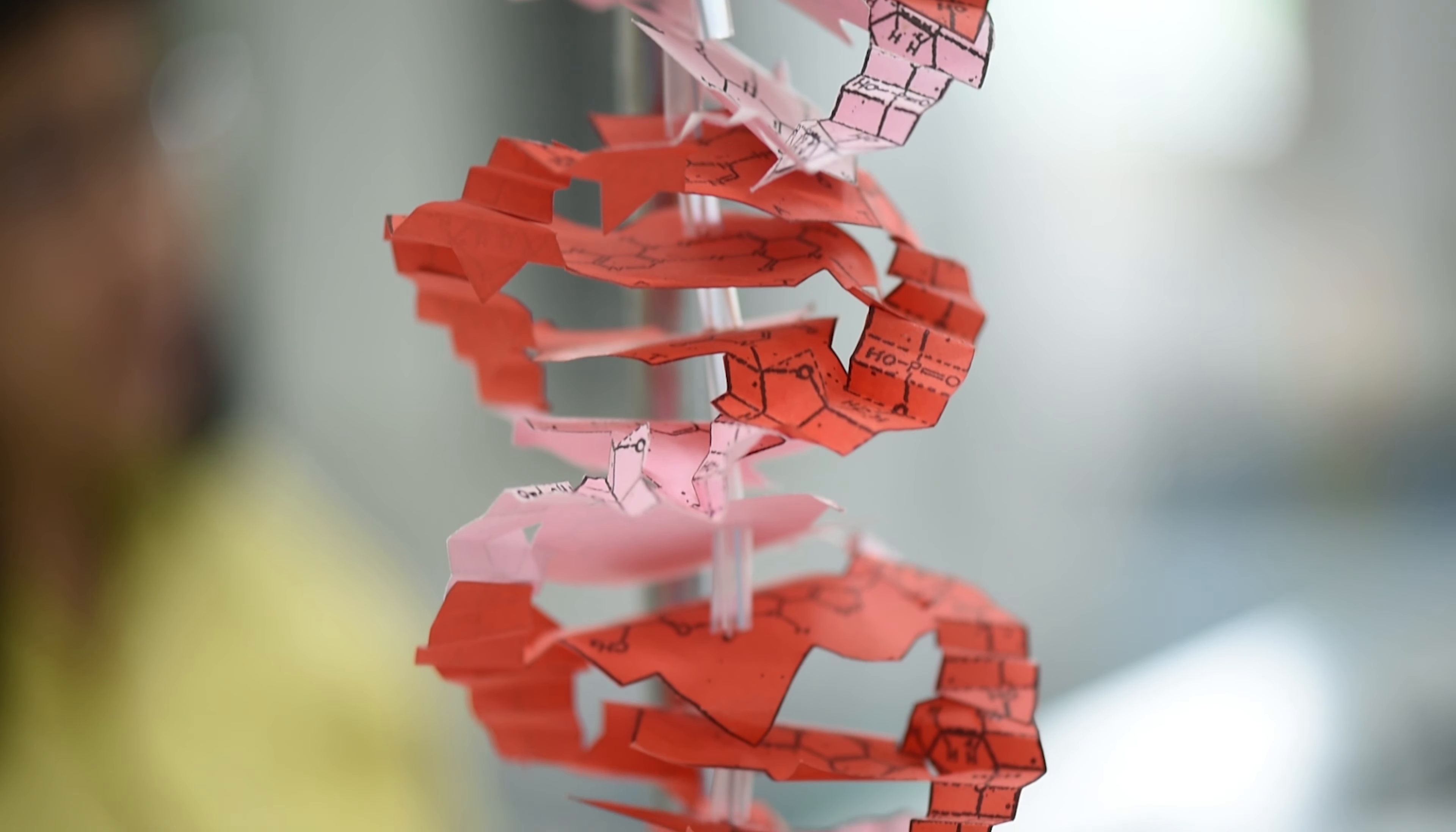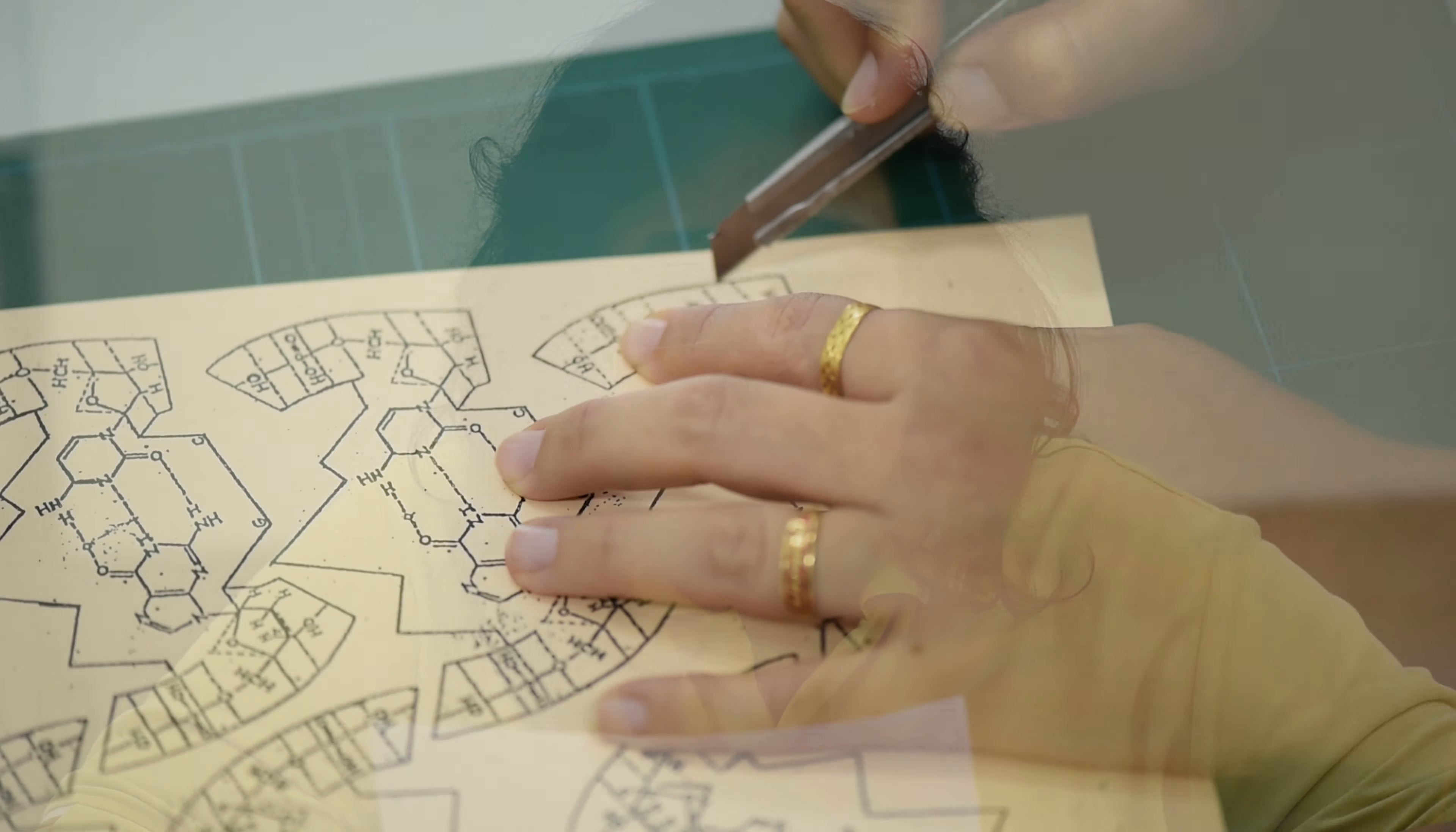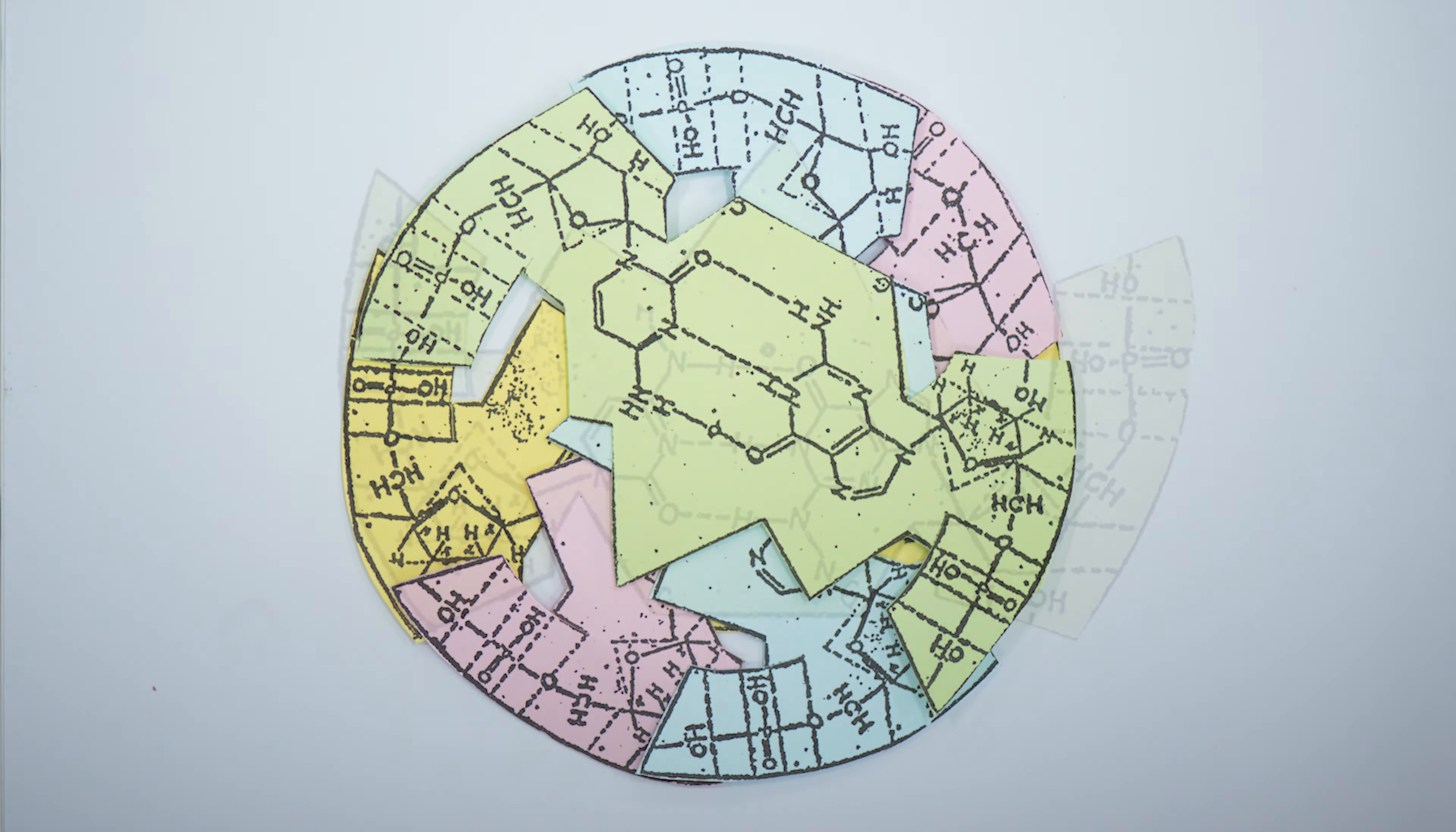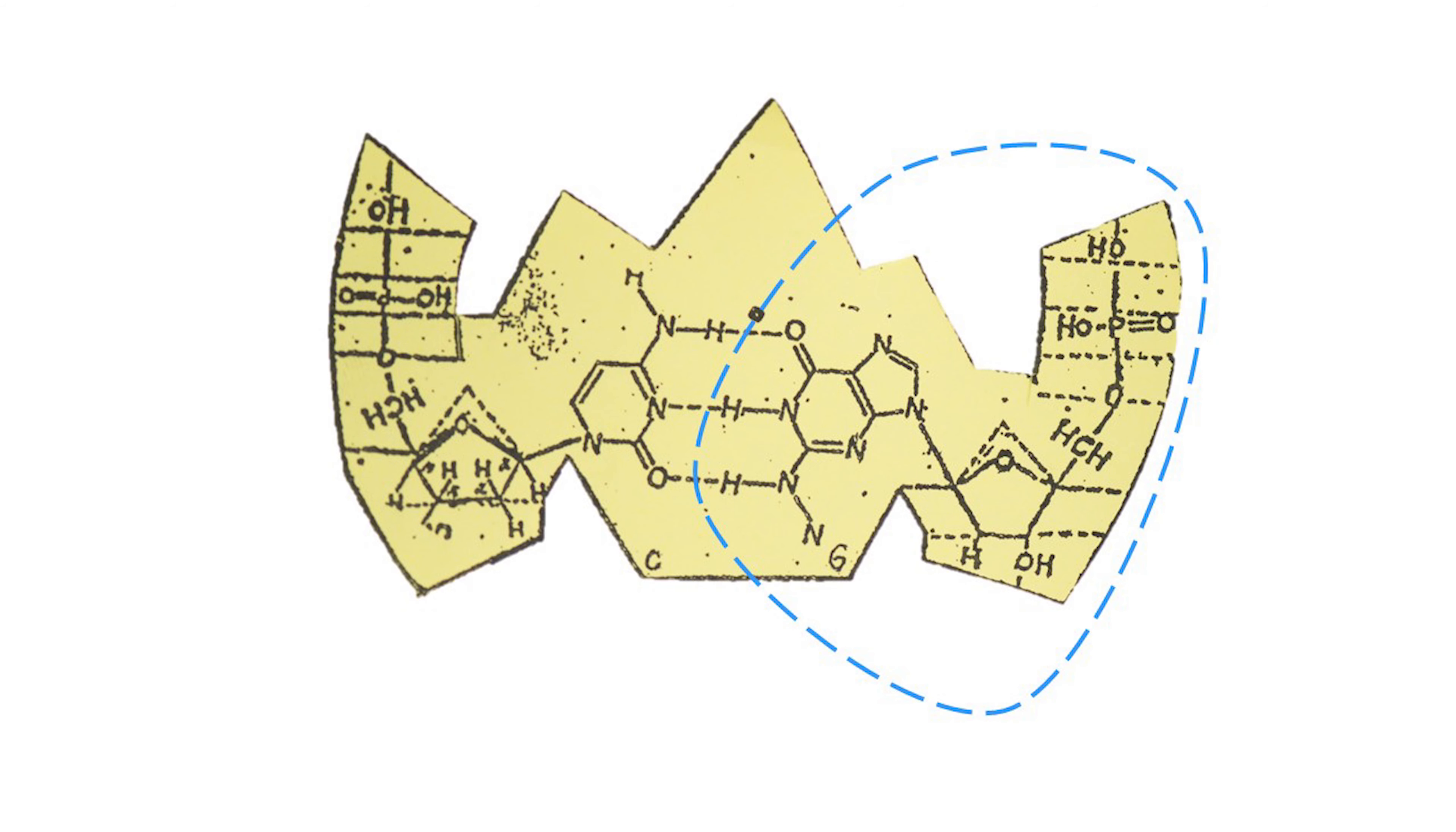Now let's see how you can make a DNA model. First, cut out 30 pieces of the DNA model. Here is the example of a piece of a DNA model. This side is a nucleotide from one strand, and this side is a nucleotide from another strand.